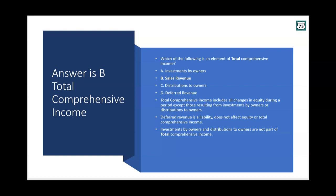Sales revenue is an element of total comprehensive income — it increases it. Expenses would be a decrease in total comprehensive income. Remember, always anticipate the next question: if expenses appear as a choice next time, they would be an element of total comprehensive income — they'd reduce it.